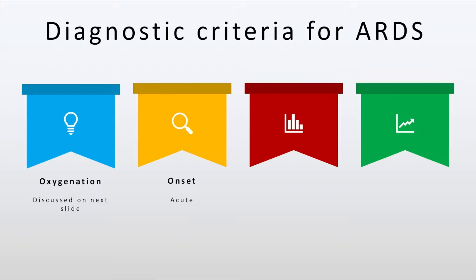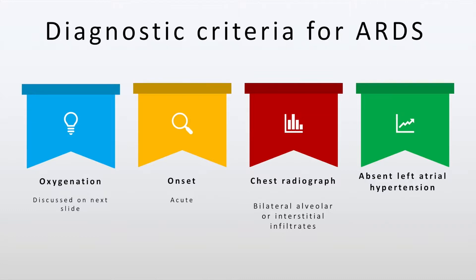The onset is often acute and the chest radiograph consists of bilateral alveolar or interstitial infiltrates. Also, there is absent left atrial hypertension in that the pulmonary capillary wedge pressure is less than 18 mmHg and there is no clinical evidence of increased left atrial pressure.